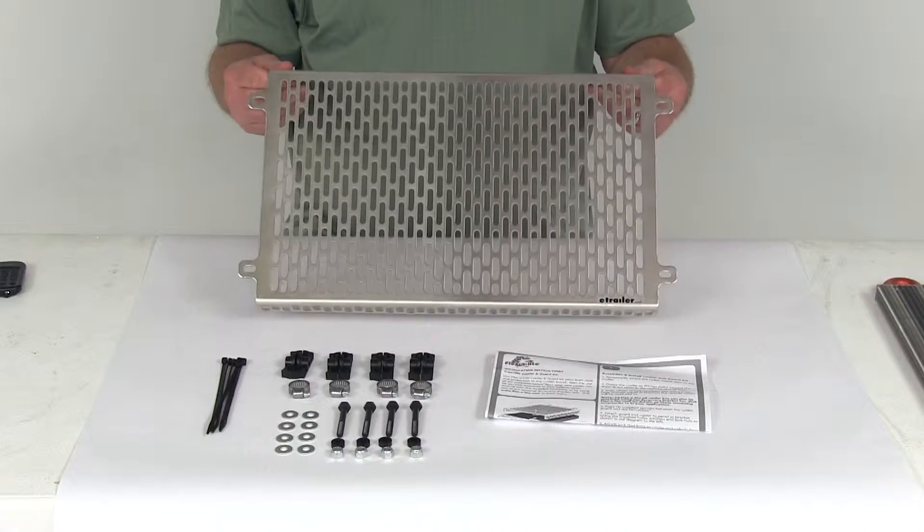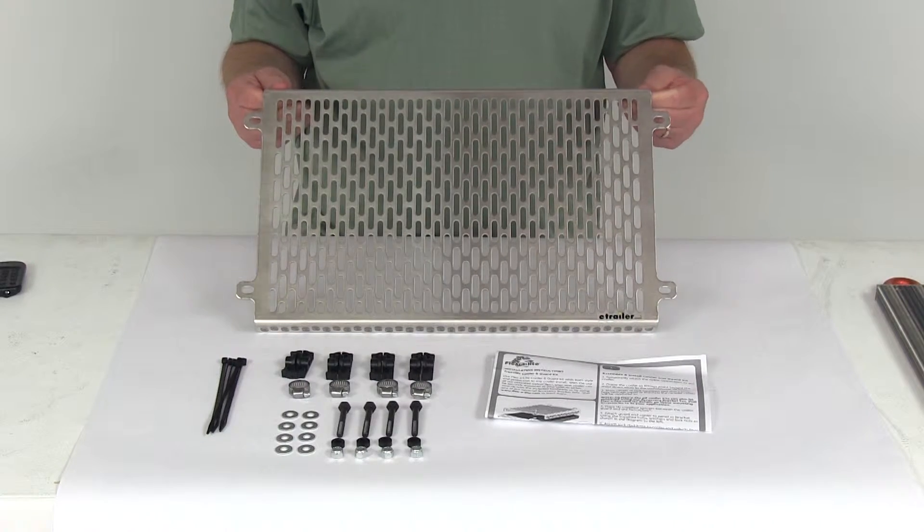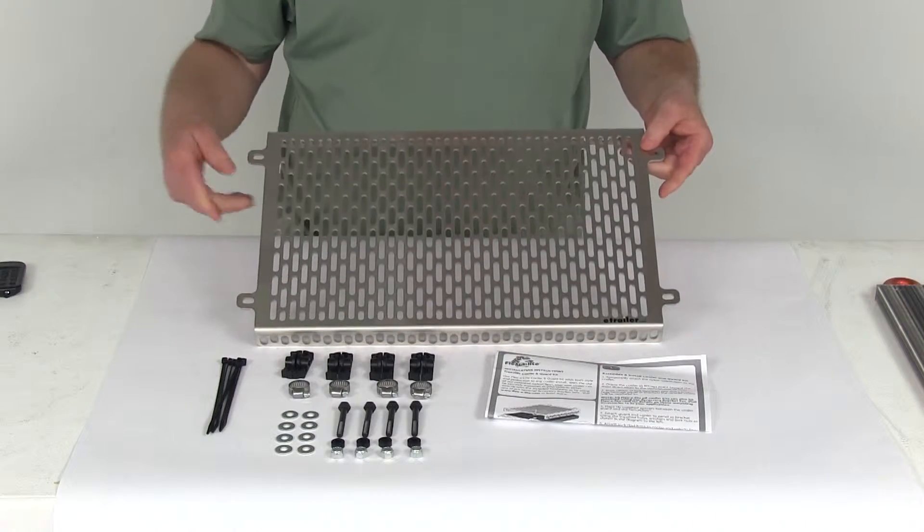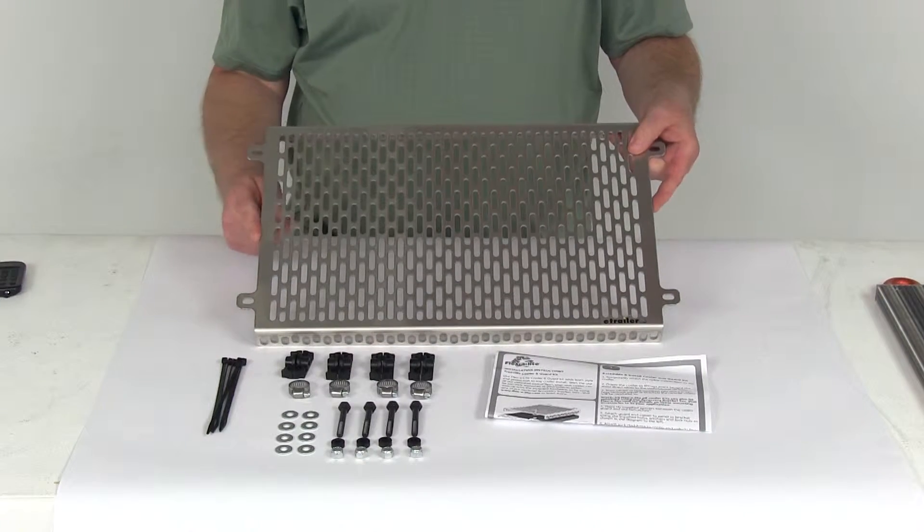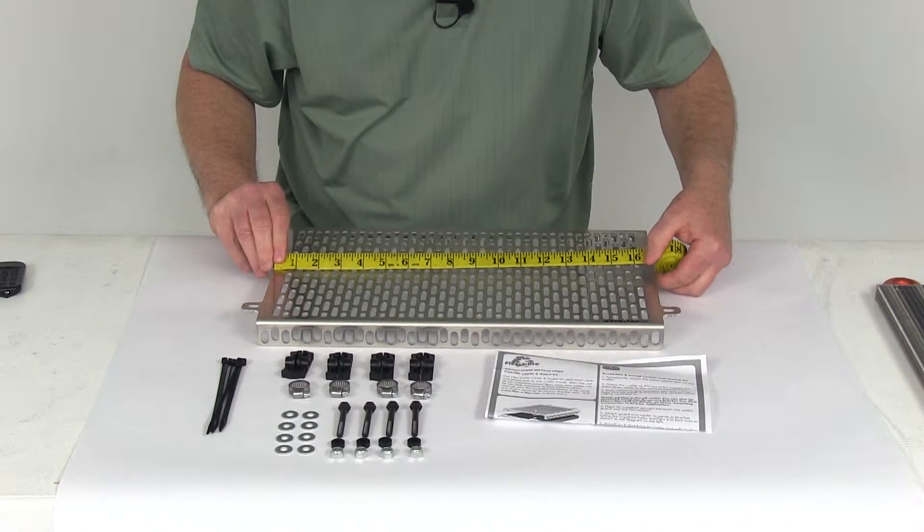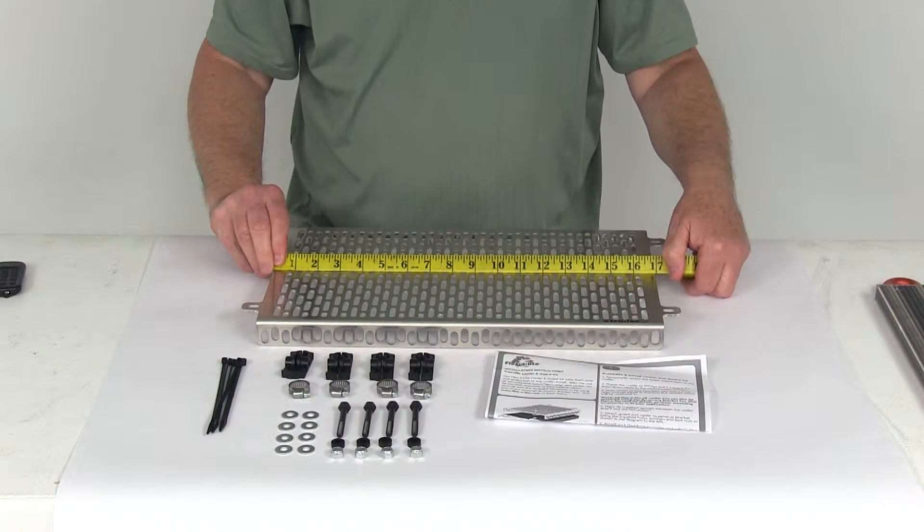Again, this part is designed to fit the Flexi-Lite FLX4126 transmission cooler, and I want to give you a few dimensions. Starting with the width of the guard from here to here, if we put the tape measure on, you can see it's right at 17 inches wide.